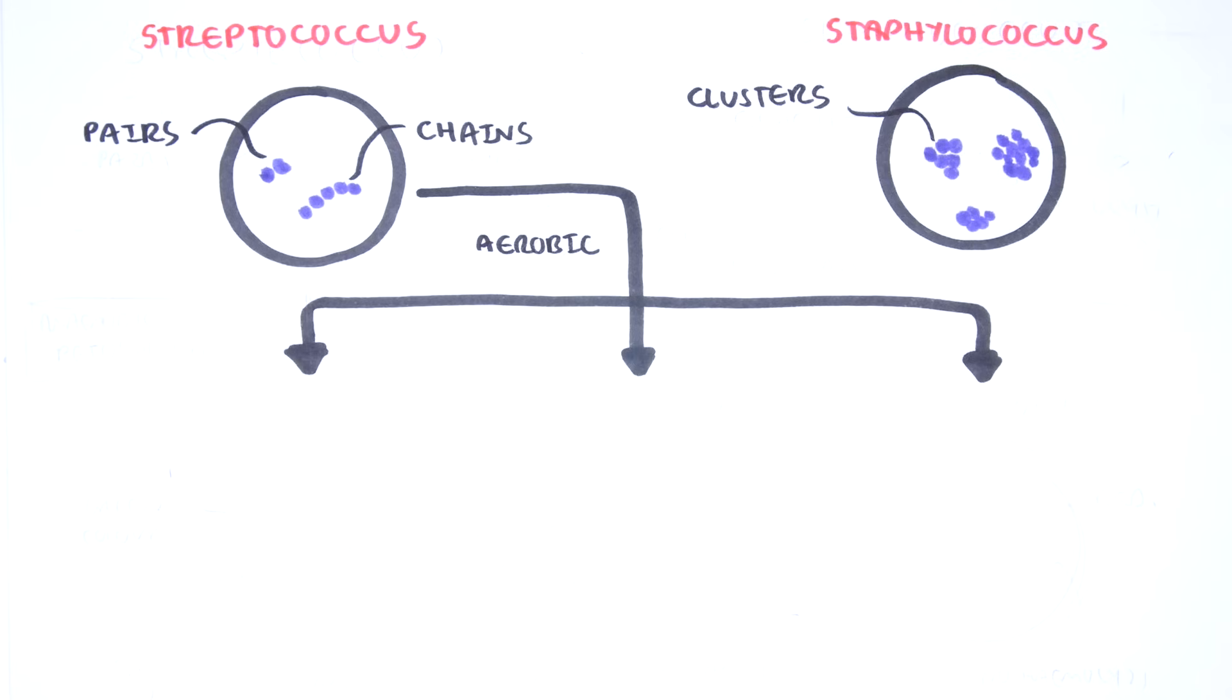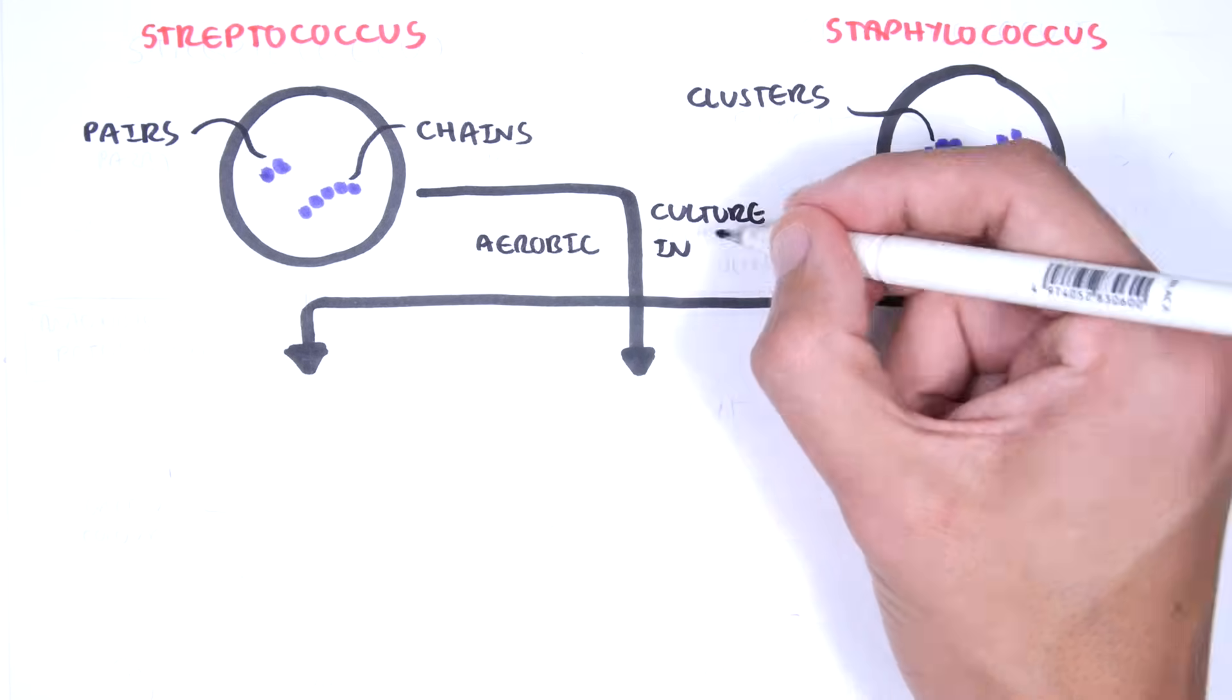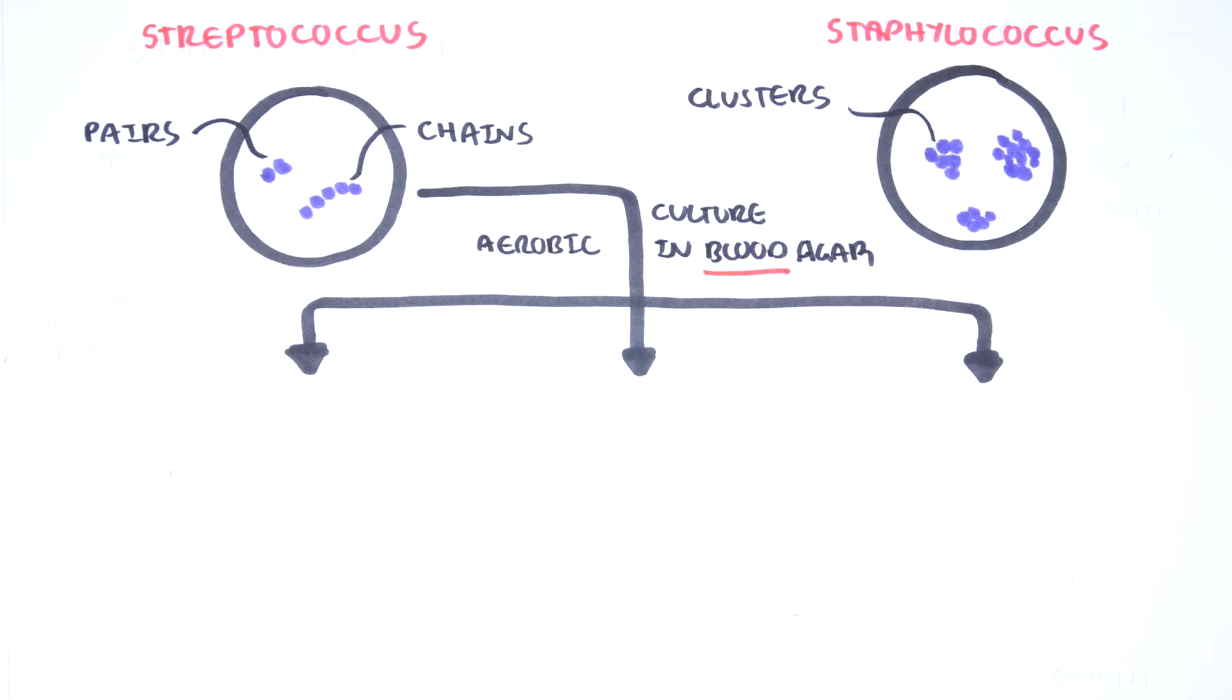The gram-positive streptococci are then further divided into the hemolytic properties in blood. The streptococcus species are smeared in blood agar, which is a plate containing blood. Hemolytic properties of the bacteria means the bacteria's ability to hemolyze, to break down the red blood cells on the plate.